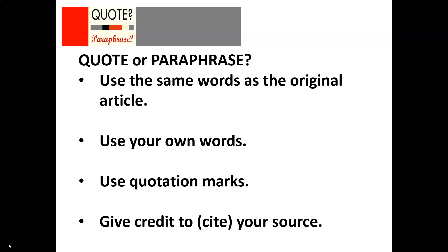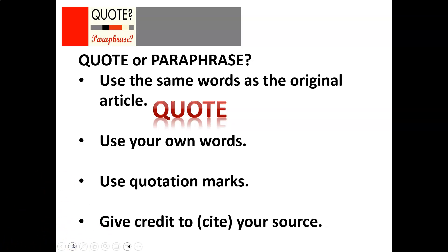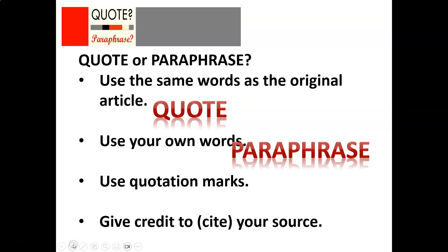Do these statements refer to a quote or a paraphrase? They use the same words as the original article. You use your own words. You use quotation marks and give credit to or cite your source. The first one — using the same words as the original article — is a quote. That means you copy exactly from a source. Using your own words, where you take the information and put it into your own words, is called a paraphrase.